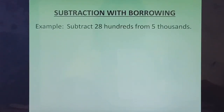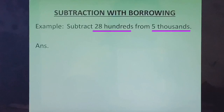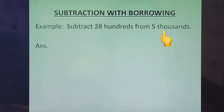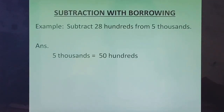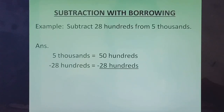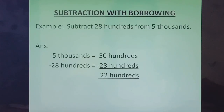Example: subtract 28 hundreds from 5 thousands. We cannot subtract directly because one number is in hundreds and one is in thousands. So from 5 thousands, we will convert to hundreds, which becomes 50 hundreds, because 1 thousand is equal to 10 hundreds. 28 hundreds will remain 28 hundreds. Now we can subtract 50 minus 28, which gives us 22 hundreds. That is our answer.